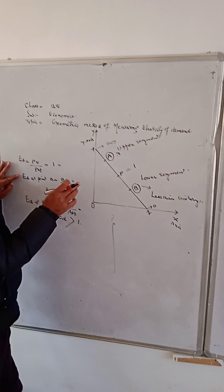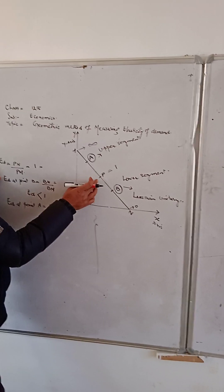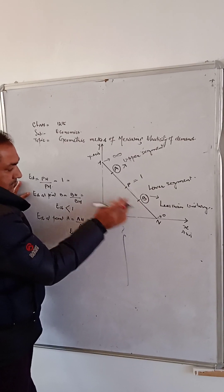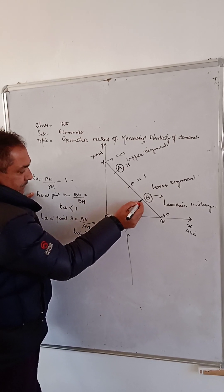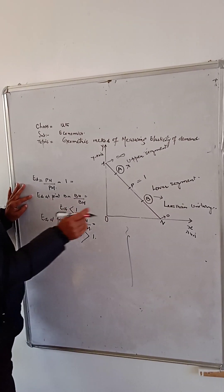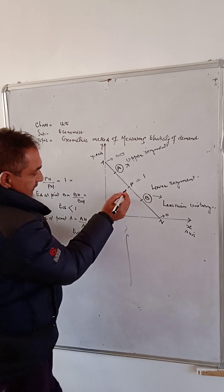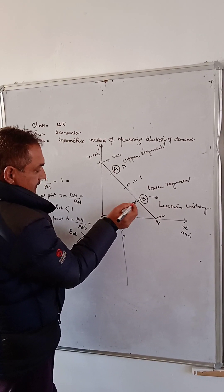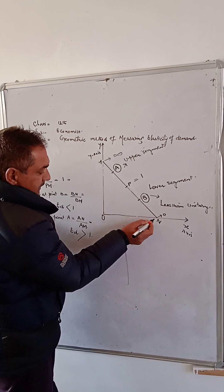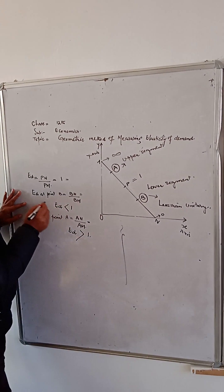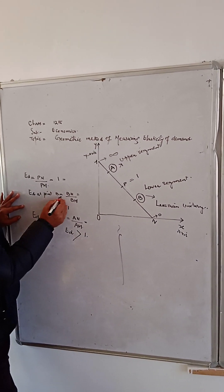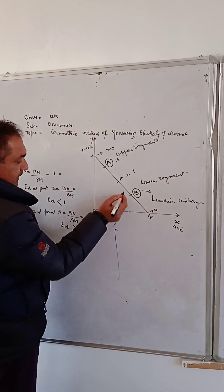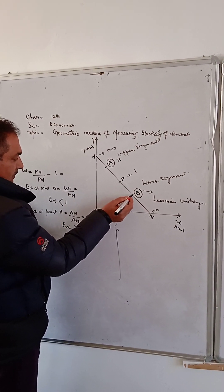If we further like to measure elasticity of demand below the point P, that is at point B, we will divide this portion into two equal parts. This gives P-B and B-N. We write elasticity of demand at point B is equal to B-N divided by B-M.